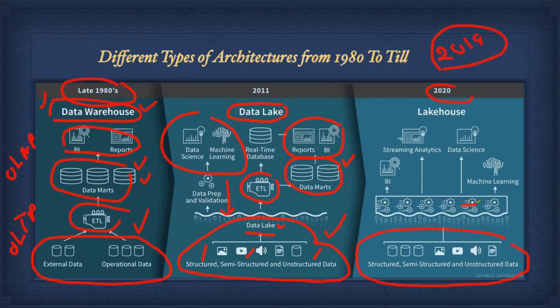Delta Lake enables database operations and database features on top of the data lake. You get both data warehouse features and data lake features combined — that is called lake house architecture. You don't need a separate warehouse; everything lives on the data lake, and Delta Lake converts unstructured, semi-structured, and structured formats for analytics purposes.